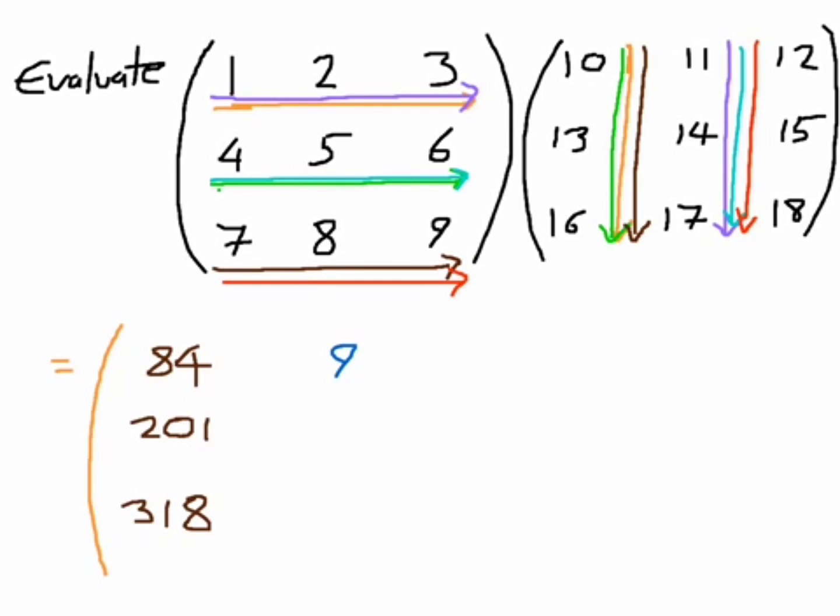The important thing to remember, and this is true for all matrices, is that you are moving left to right on your left-hand matrix and top to bottom on your right-hand matrix, always aligning. If you look at the first one I did in orange, when I moved across the top and down, I always had the overlap of the 1 and the 10 on those two lines.